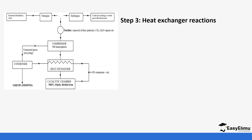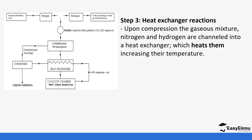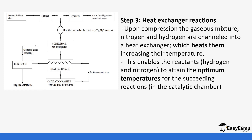After it moves from the compressor, it is taken to the heat exchanger. The heat exchanger increases the temperature of the reactant mixture — they are heated to an optimum temperature, which in this case is 400 degrees Celsius, or 450 in some books. This enables the reactants to obtain the optimum temperature for succeeding in the reactions. After leaving the heat exchanger, the gases have already achieved that optimum temperature.